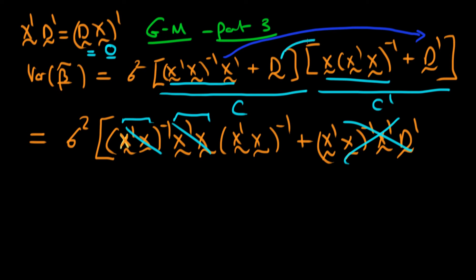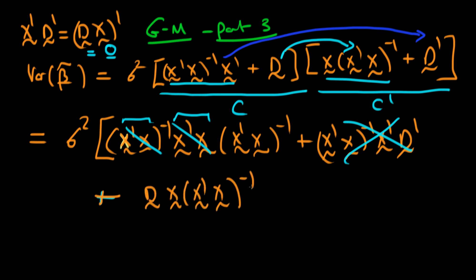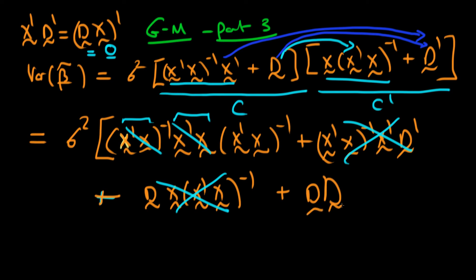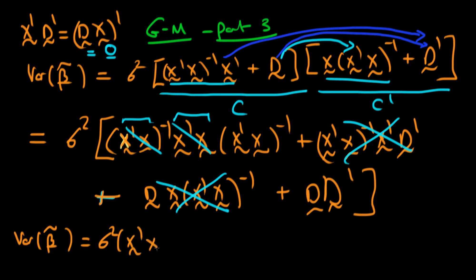The third term is just matrix D times the first term in the second parenthesis, which is going to be equal to D times x times x primed x to the power minus 1. Again we know that DX crops up, and we know that in order for beta tilde to be unbiased DX has to be equal to zero, so this third term also disappears. Finally we're left with our product D times D primed, which we can't simplify. So we can write the variance of beta tilde as sigma squared times x primed x to the power minus 1, plus sigma squared times D D primed.